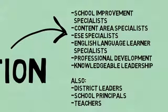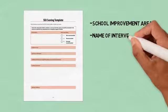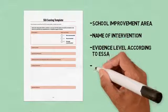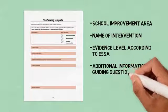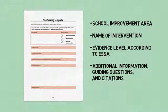Team members individually review research and identify one or more evidence-based interventions to present to the team. They also review and rate the sample interventions included in the guide. The SEA scoring template contains fields where team members may enter the school improvement area, the name of an intervention in that area, the evidence level according to ESSA — strong, moderate, or promising — a summary of research, and any additional information that should be considered, guiding questions that may provoke team discussion, and a place to enter citations.